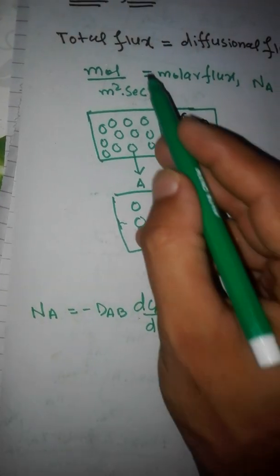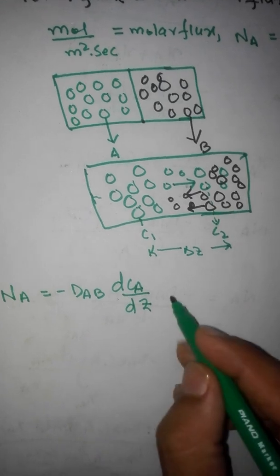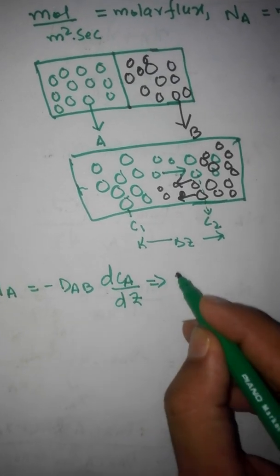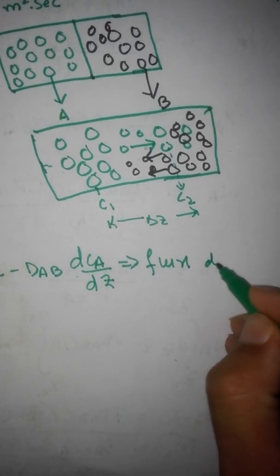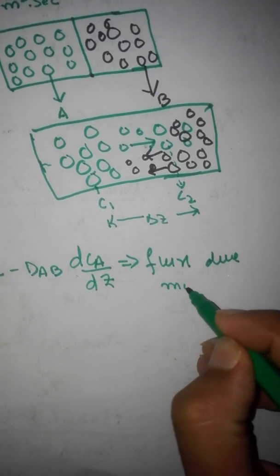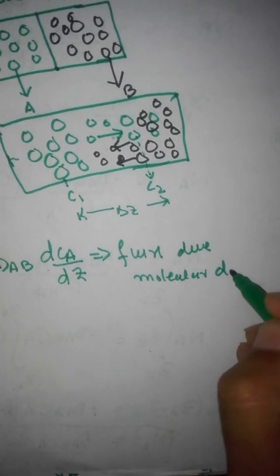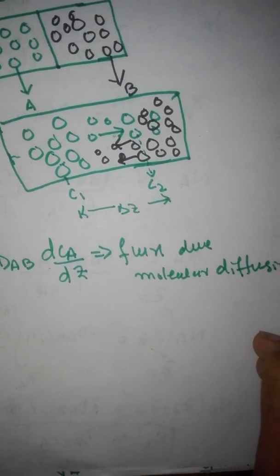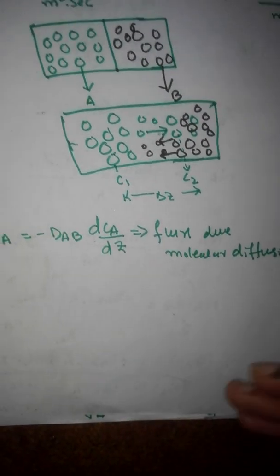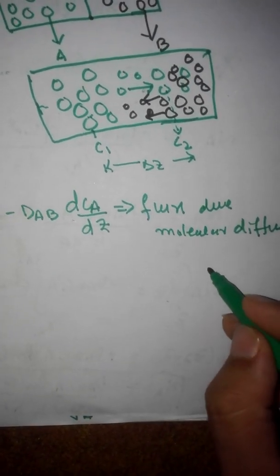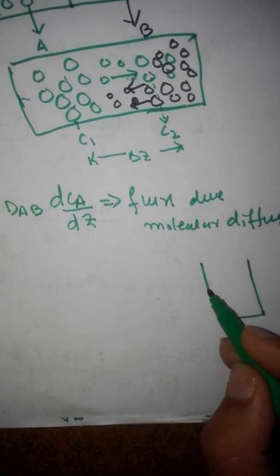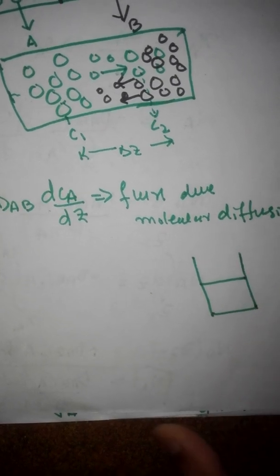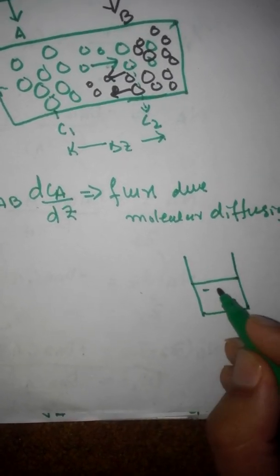So the total flux is diffusional flux plus convective flux. The diffusional flux is the flux due to molecular diffusion, because molecules are diffusing from a high concentration region to a lower concentration region.